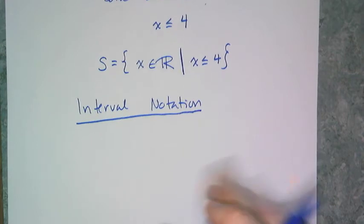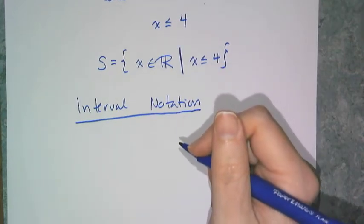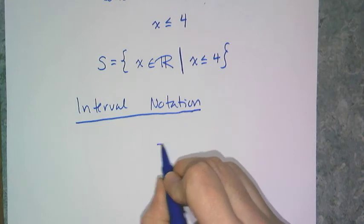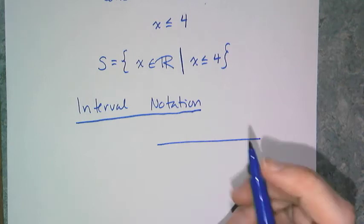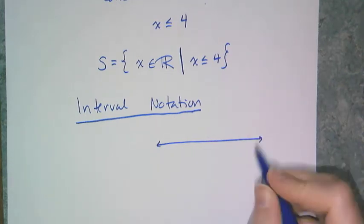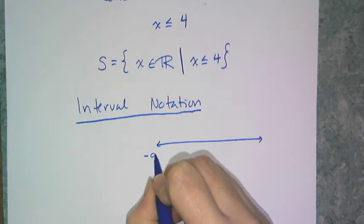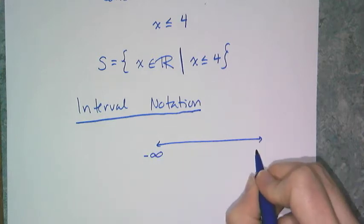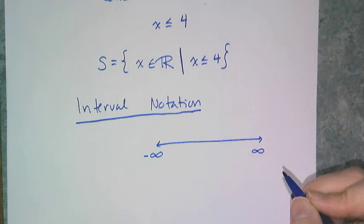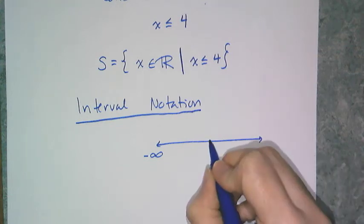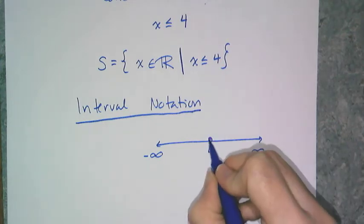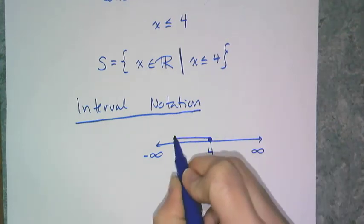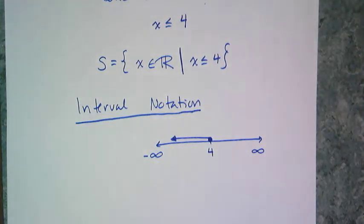You have to make sure whichever method you use, you understand it. The difference between interval and set is that you look at the number line and you're basically writing what portion of the number line your solution set is. For interval notation, I have to remember that going off in this direction is negative infinity, and going off in this direction is positive infinity.